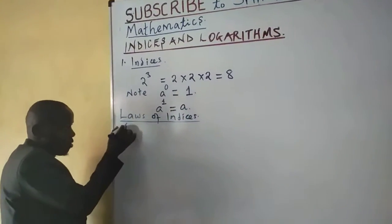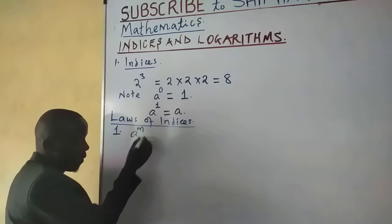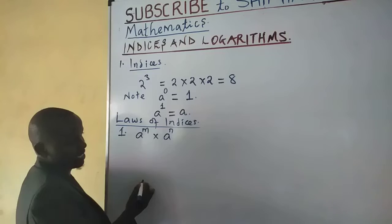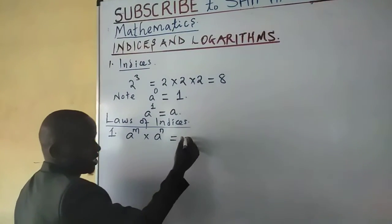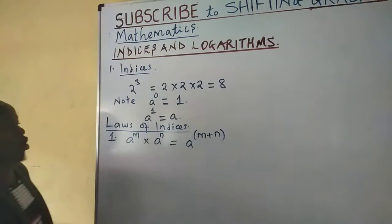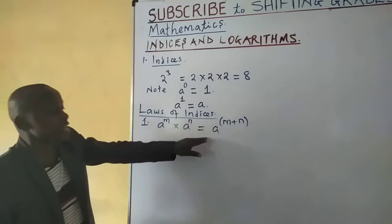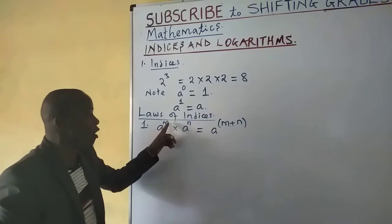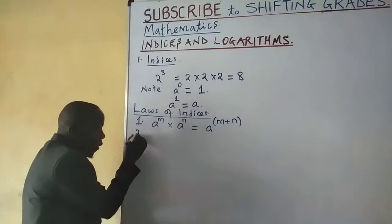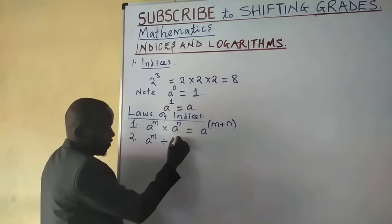The first law of indices says that when you have a number a raised to power m, multiplied by the same number raised to a different index, the result is the number a raised to the sum of the indices. So when a^m is multiplied by a^n, the result is a raised to m plus n.